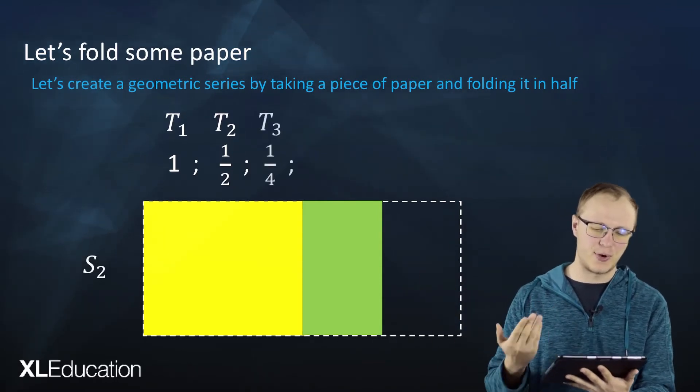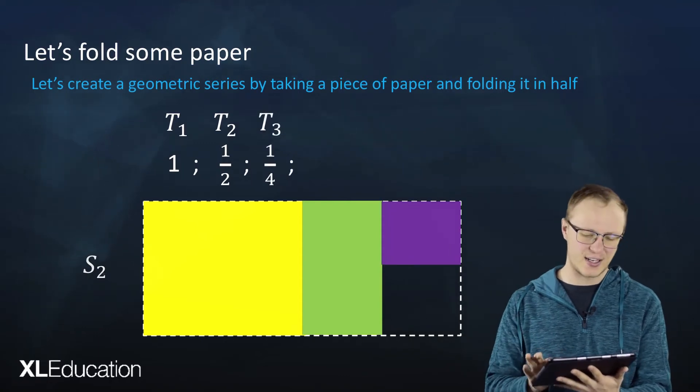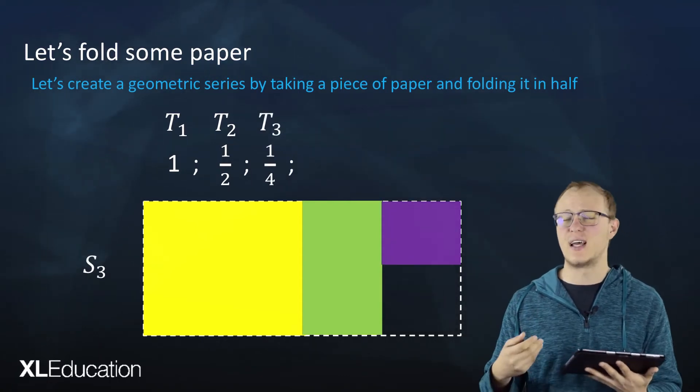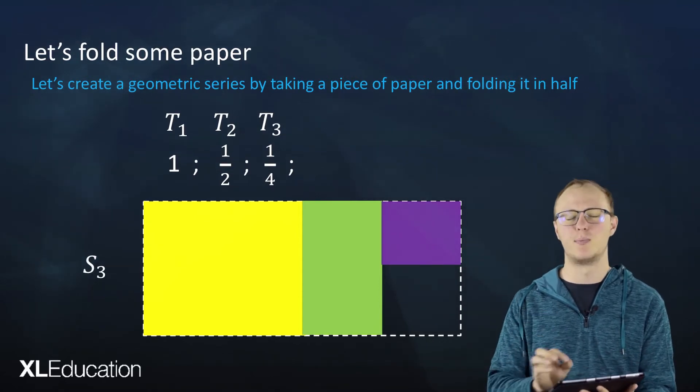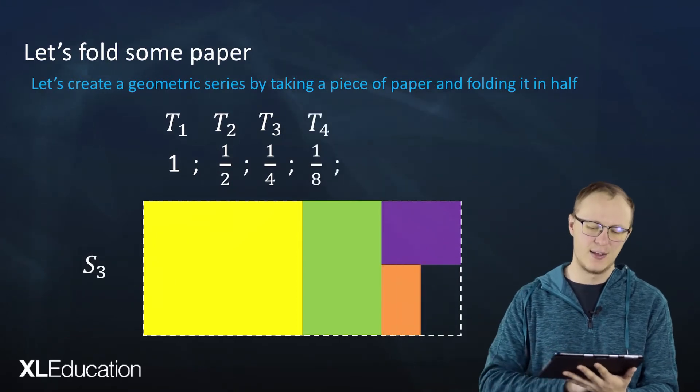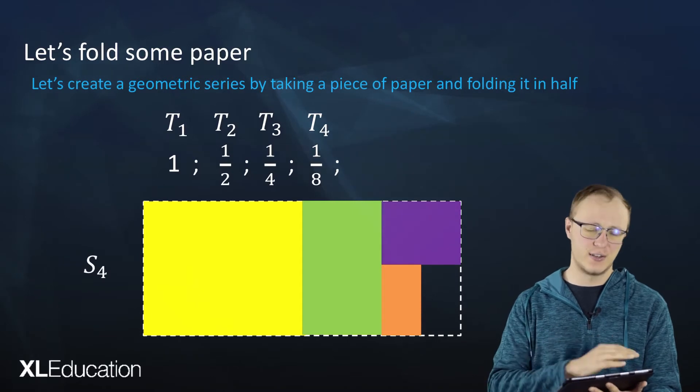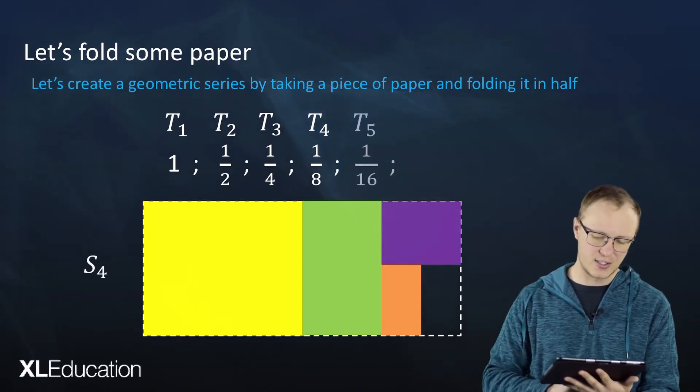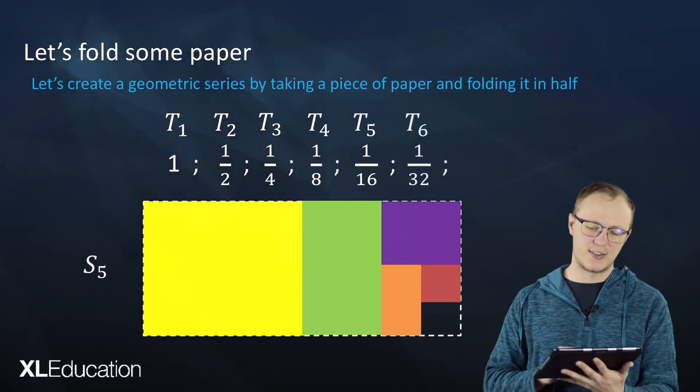Term 3 has to be a quarter because we fold a half in half. So now S3, the sum of the first three terms, is the yellow plus the green plus the purple, all of that together. Term 4 is an eighth. Then S4 is the whole thing together. Term 5 is a sixteenth. Term 6 is a thirty-second.